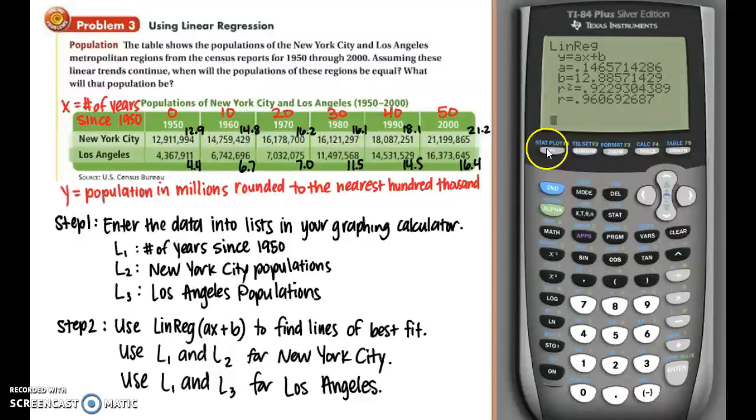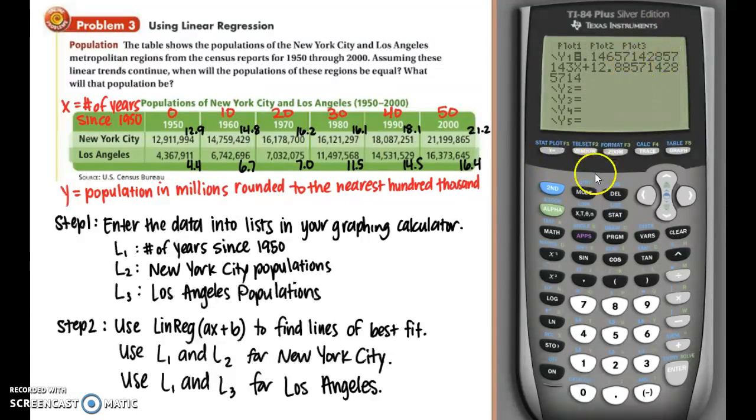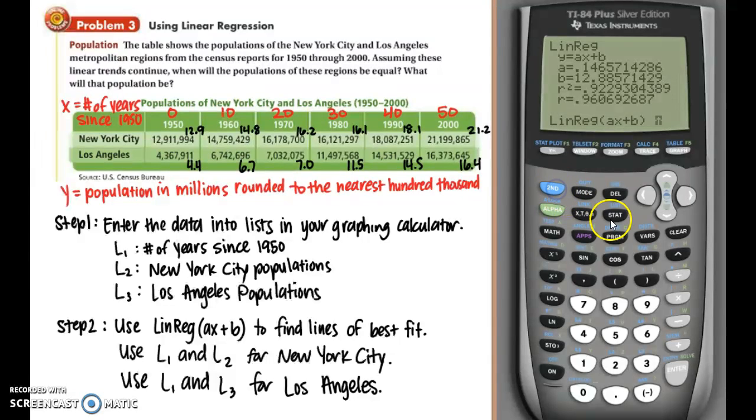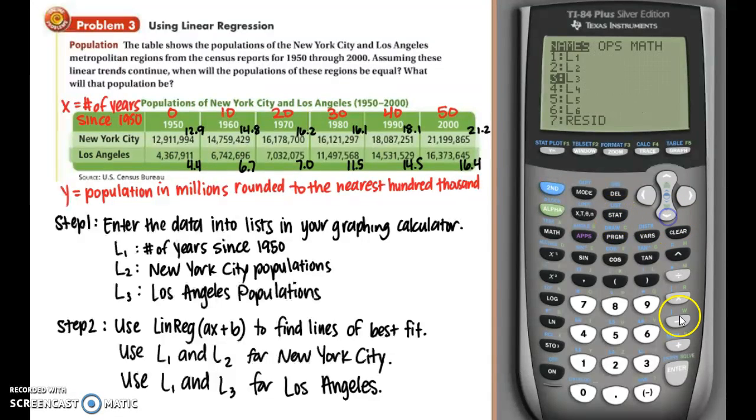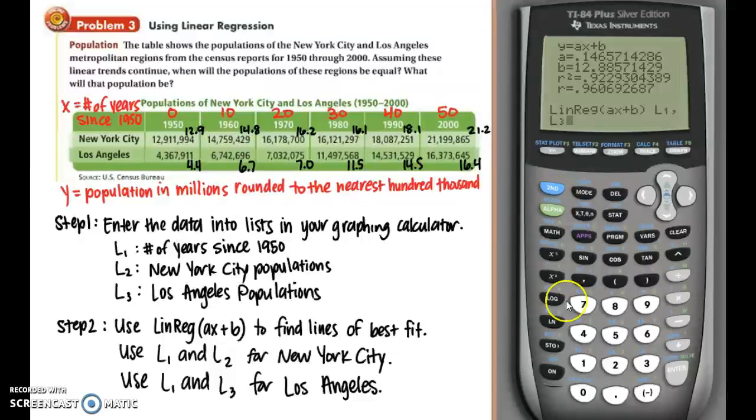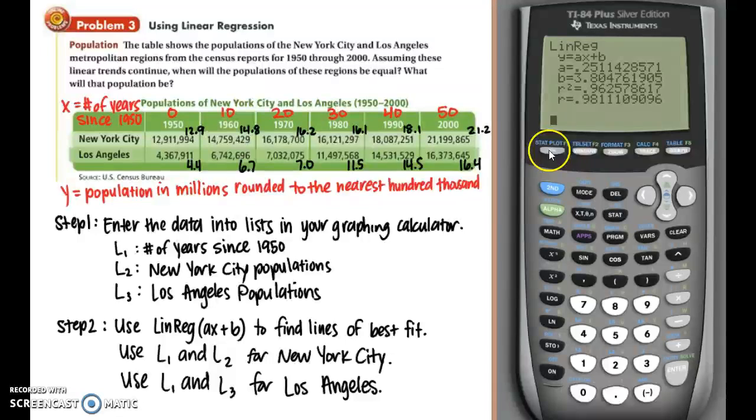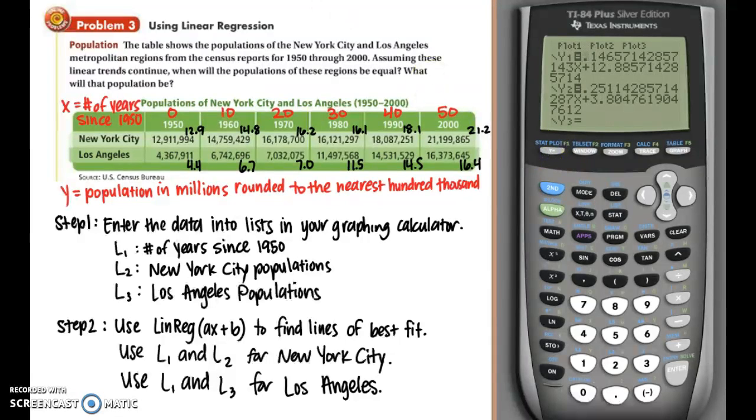And you can see right here that the equation is stored in y1. So now we're going to do a similar thing for list 1 and list 3 for Los Angeles. So let's go back to stat and calc, and then number 4, linear regression. And then I need to do the list 1, list 3. This time, make sure you change it on your calculator. And then I want to put that equation in yvars function. Make sure you do y2 this time, because if you do y1, you're just replacing your other equation. You want to have both. And then press enter. And there's our new equation. Let's go over to y equals, and you can see that both of those equations are stored there. Now we're going to graph those.